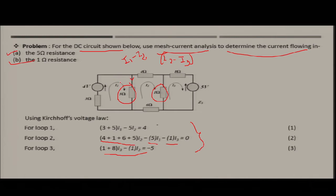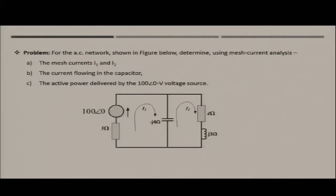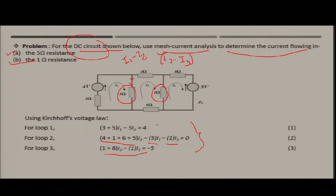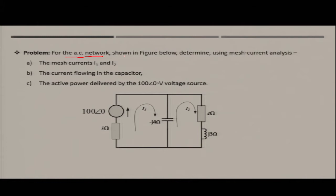Using mesh analysis, you can find the value of mesh currents and from these determine the current in particular branches and the voltage drop across elements. In the next example, we consider an AC network and use mesh current analysis to determine the values of i1 and i2.